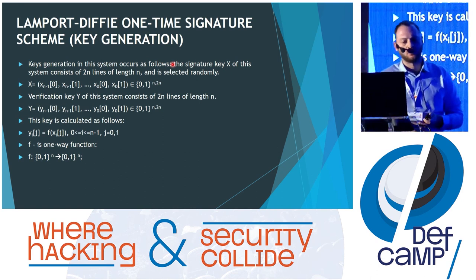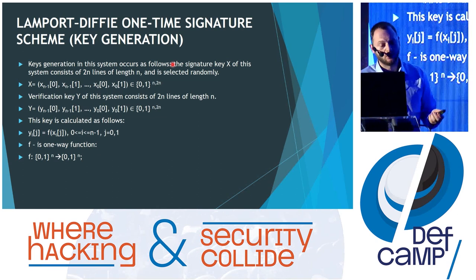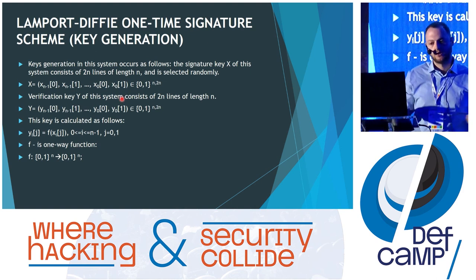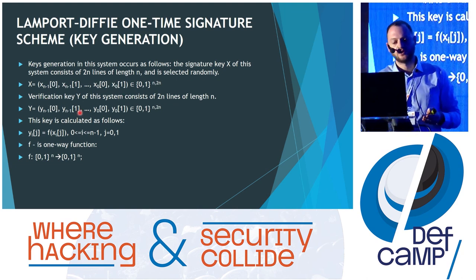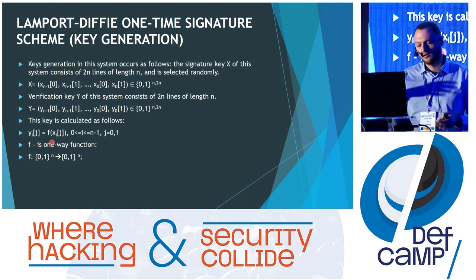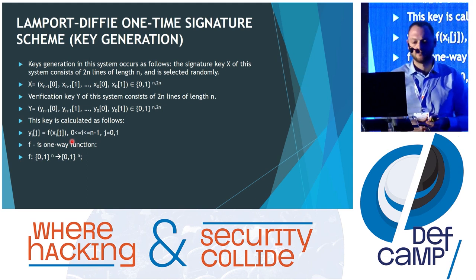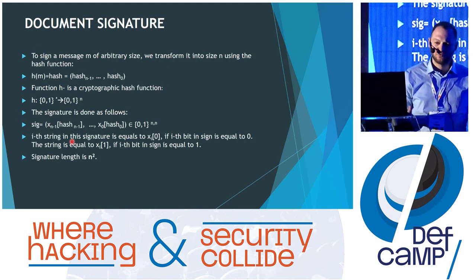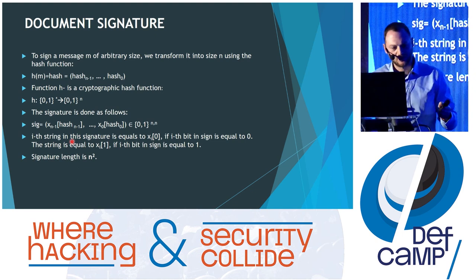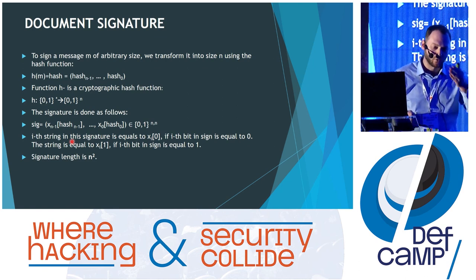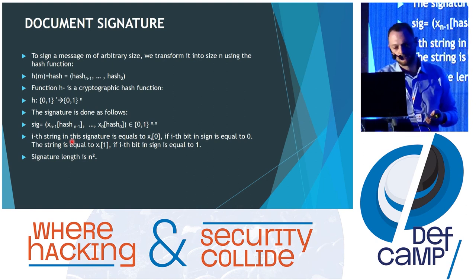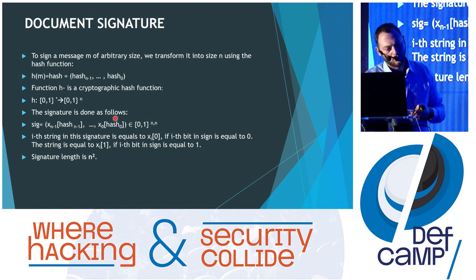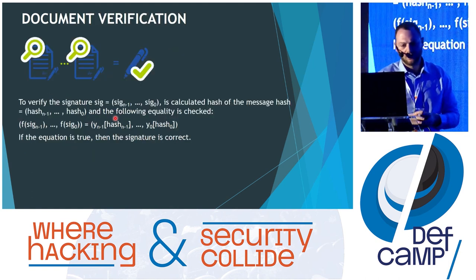First, Lamport one-time signatures were proposed. We have signature keys and verification keys — n pairs, meaning 2n signature keys, each of length n. To get the verification key we apply a one-way function to it. To sign the message, we look at the message: if the first bit is zero we take the first element from the pair, and if it's one we take the second element. The signature length we get is n squared.